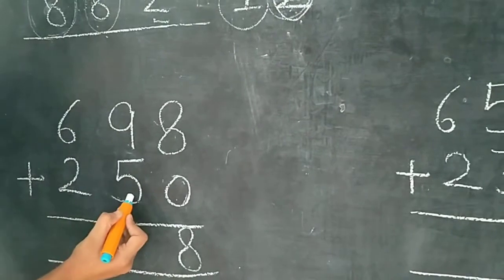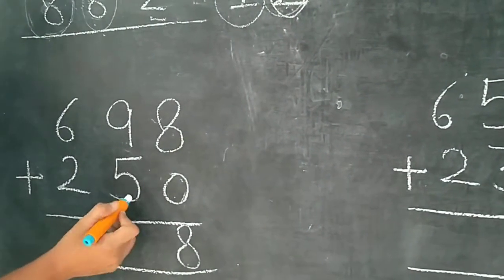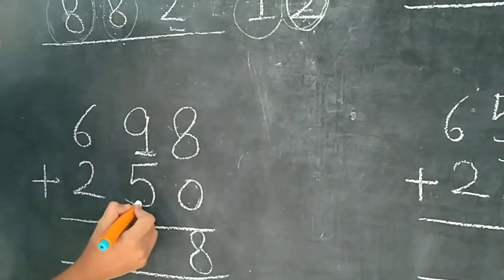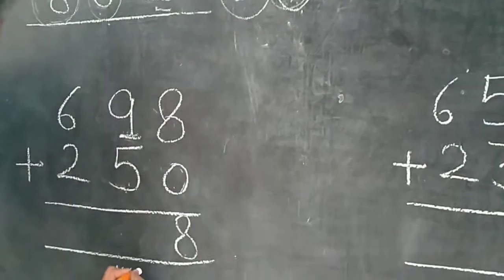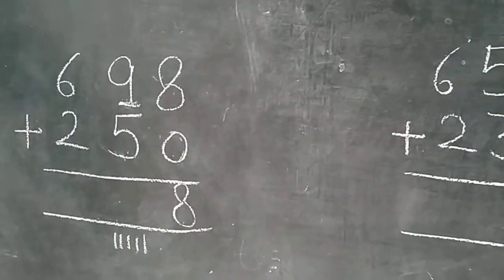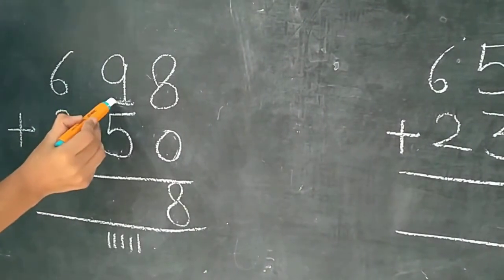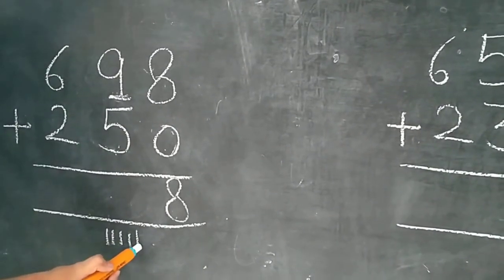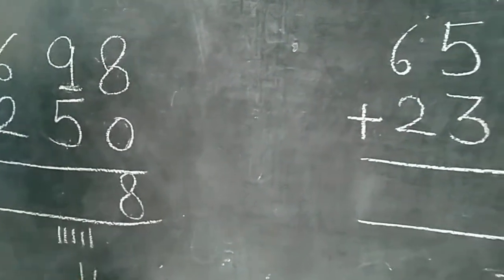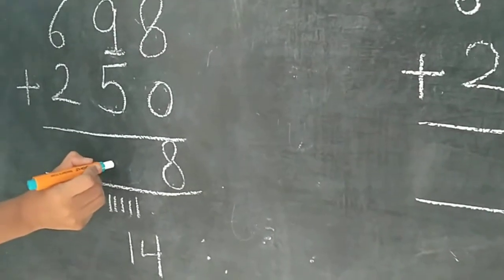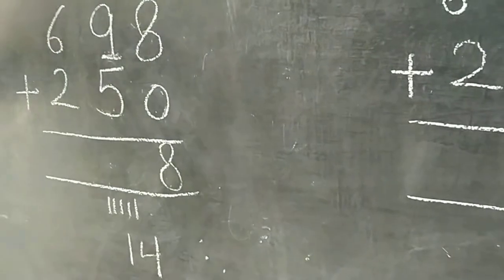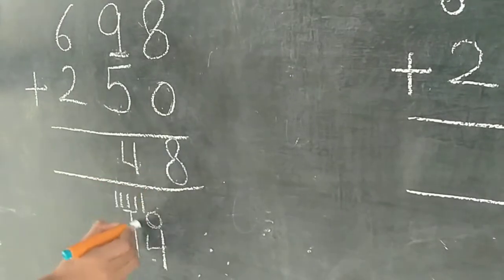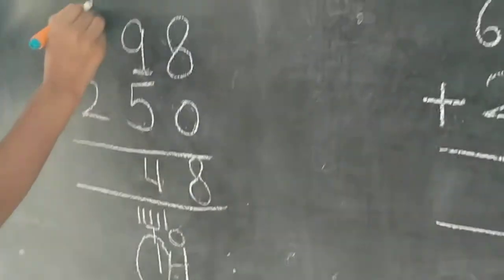Now we have to count 9 plus 5. 9 aur 5 ko hume count karna hai. 9 is already right here, so we draw 5 lines: 1, 2, 3, 4, 5. Now we have to count. 9 ke baad kiya aata hai? 10, 11, 12, 13, 14. But we don't write here 14. Hamei 1s wali digit likhni hogi — 4. 4 hum yaan likhenge, and 10s hamaari carry.